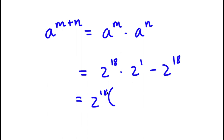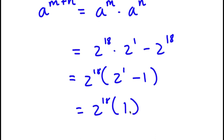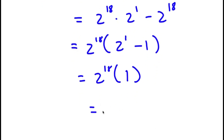And negative 2 to the power of 18 divided by 2 to the power of 18 is simply negative 1. So this is the same thing as 2 to the power of 18 times 2 to the power of 1 is 2, and 2 minus 1 is 1. So 2 to the power of 18 times 1, which is simply equal to 2 to the power of 18.